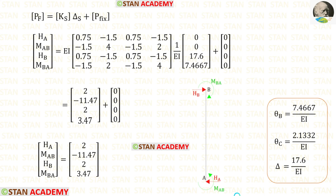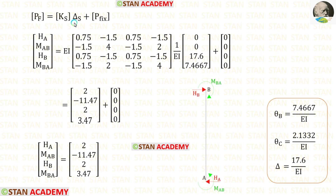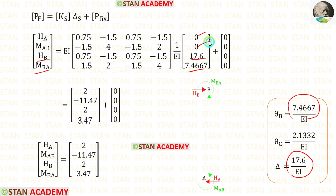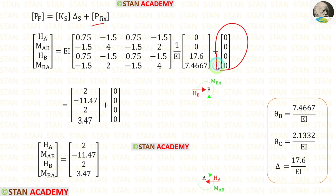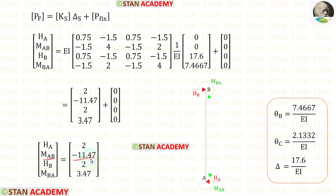Now let us find the final moments and horizontal reactions in column AB. We apply the element stiffness matrix for column AB. In the displacement matrix, we apply the sway value for HB and the value of θB for MBA; for the other members we apply 0. The fixed end moments and reactions are 0. Finally, in column AB we obtain the reactions and moments. For MAB we get a negative value, meaning it is acting in the anti-clockwise direction.